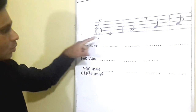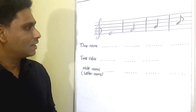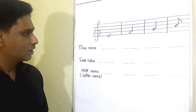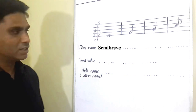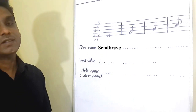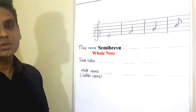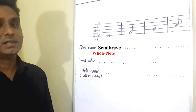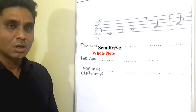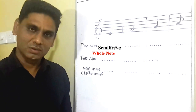Let's go to the first music note. This is a symbol which looks like an oval shape. It is called Semibreve — this is the time name of this symbol. And also, there is another time name: Whole note. So remember, there are two time names of a music note: one is Semibreve, the other one is Whole note.